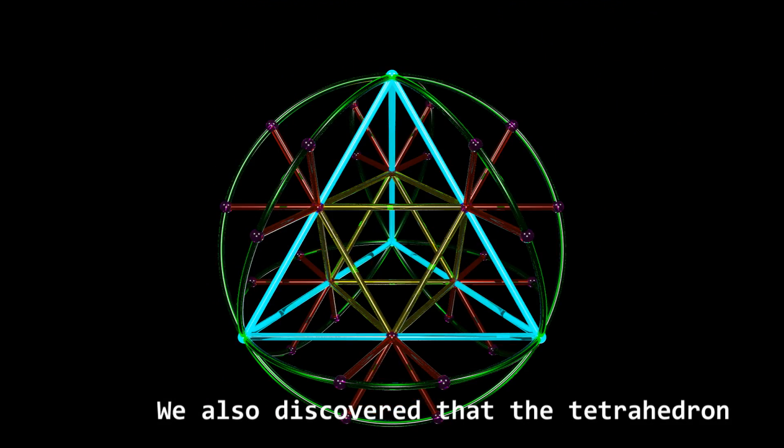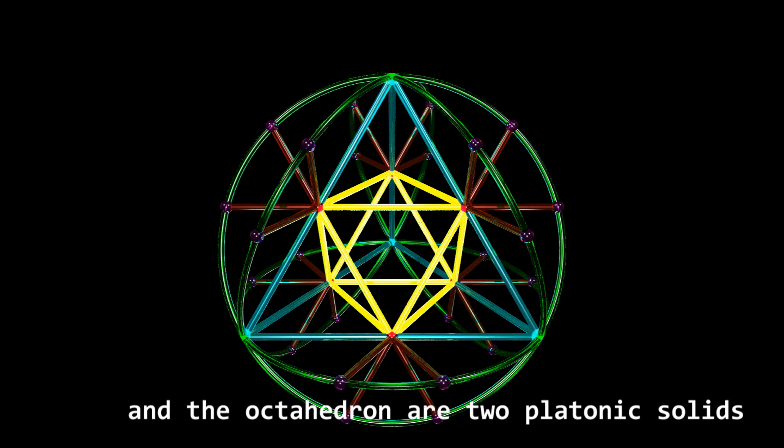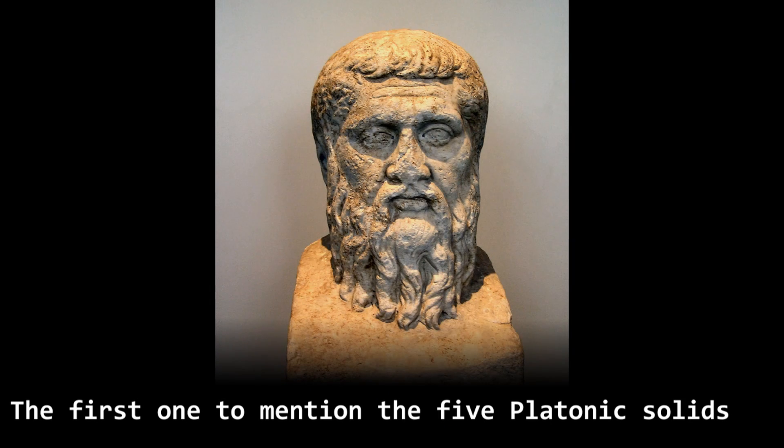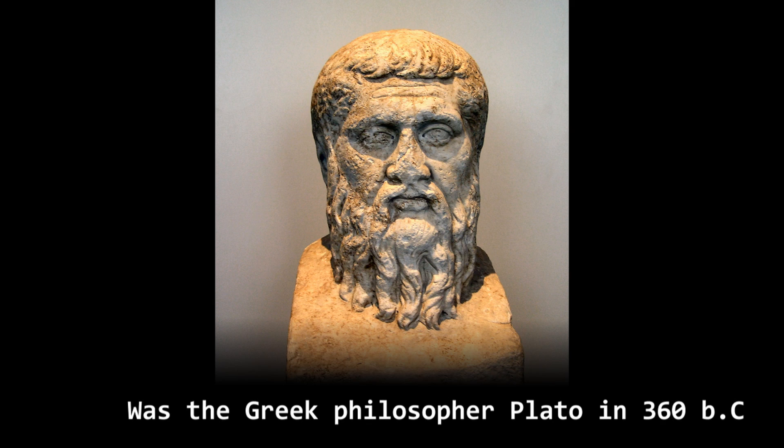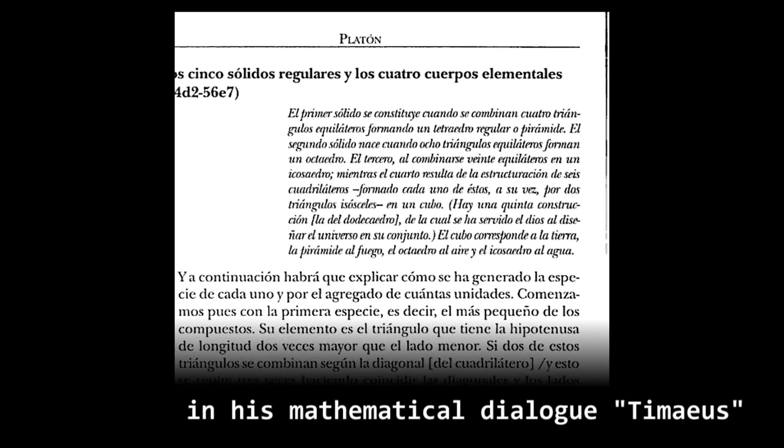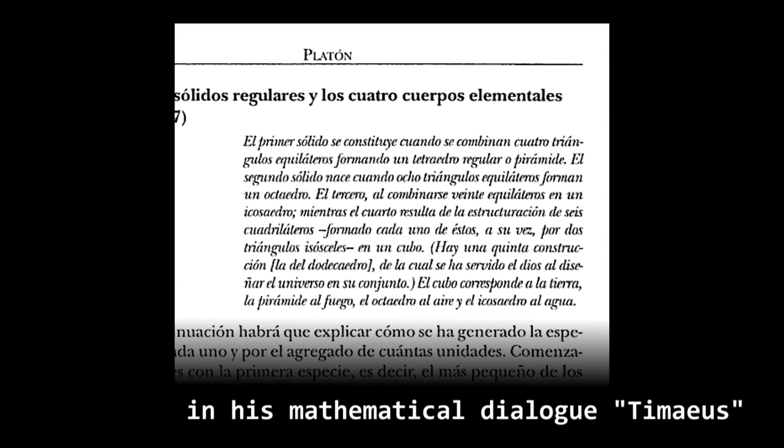We also discovered that the tetrahedron and the octahedron are 2 Platonic solids. The first one to mention the 5 Platonic solids was the Greek philosopher Plato in 360 BC in his mathematical dialogue Timaeus.